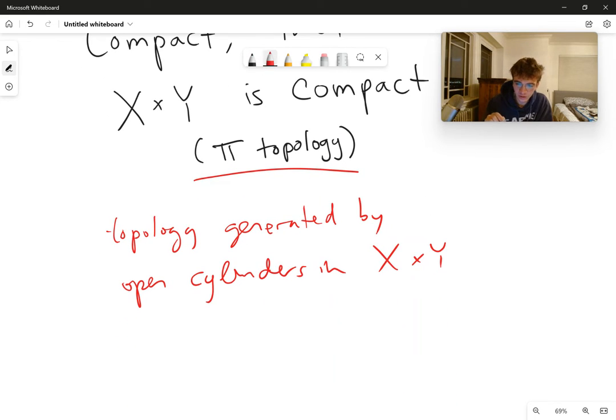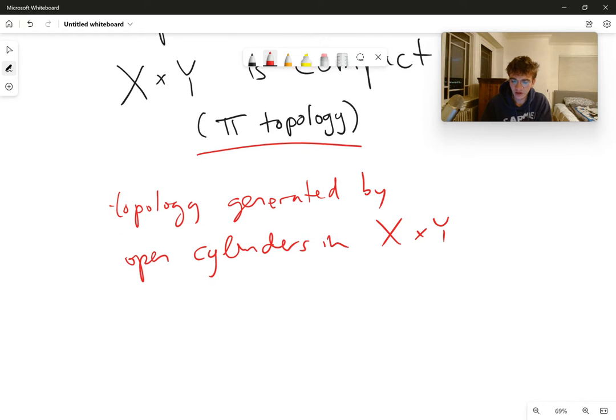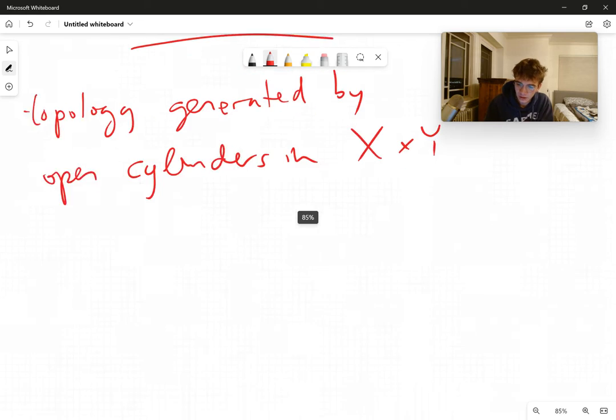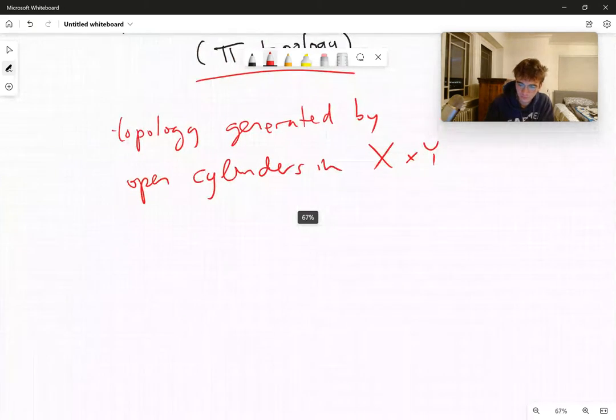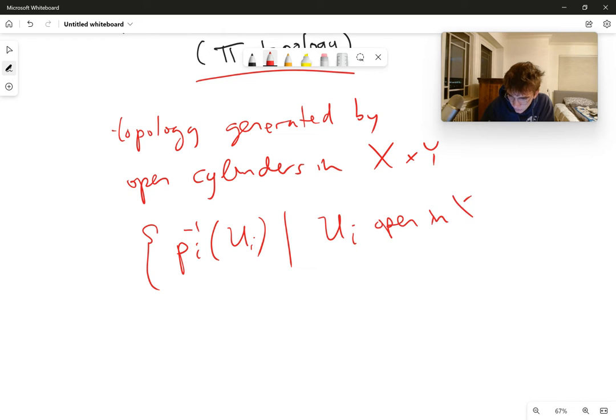So quickly, let's define the product topology. The product topology can be defined in many different ways, but the way I'm going to define it for you right now is it's a topology generated by the set of all open cylinders in X cross Y. And so mathematically, I'm going to have the set of all inverse projections of U, such that U sub I open, X sub I and I within I.